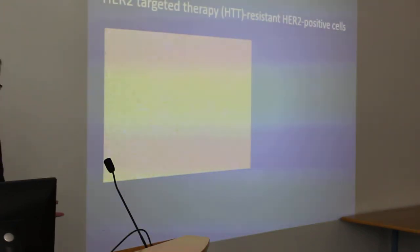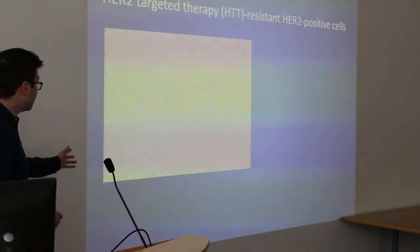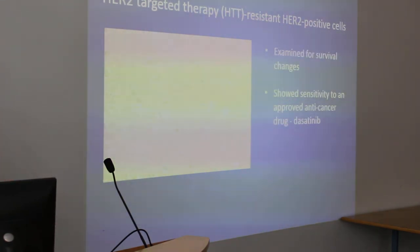So an example of this: these are HER2 positive breast cancer cells. They were treated for 6 months with a HER2 targeted therapy agent. They were examined by different protein experiments to find what changes occurred in the cells, and they showed an increased sensitivity to an already approved anti-cancer drug called dasatinib.